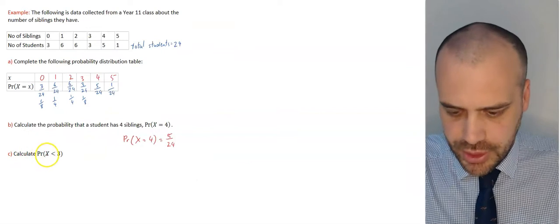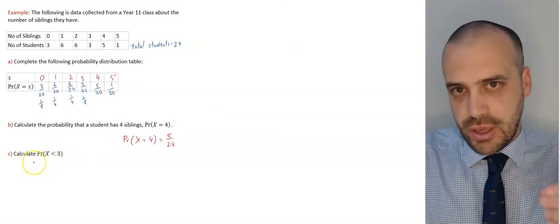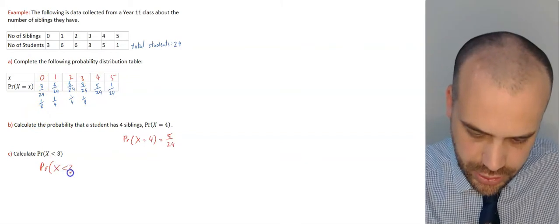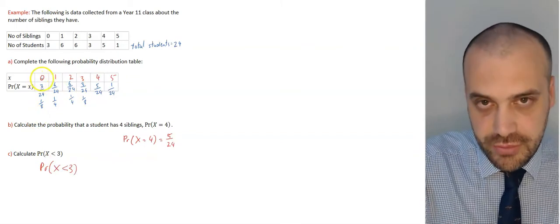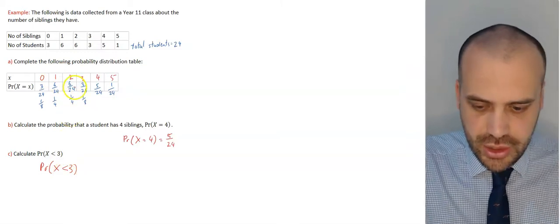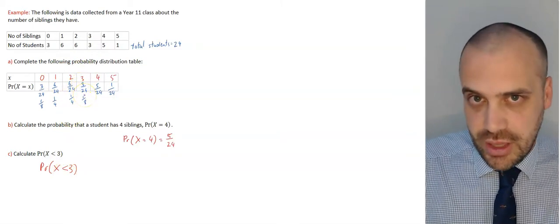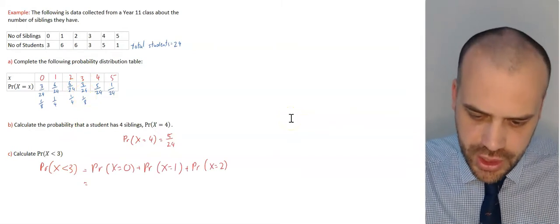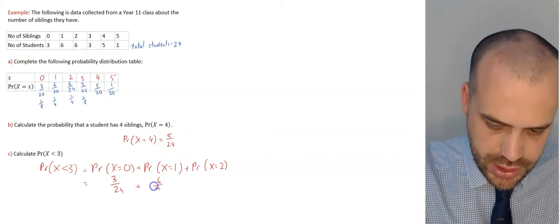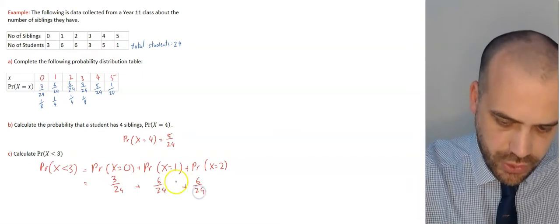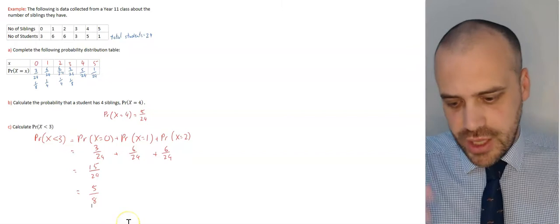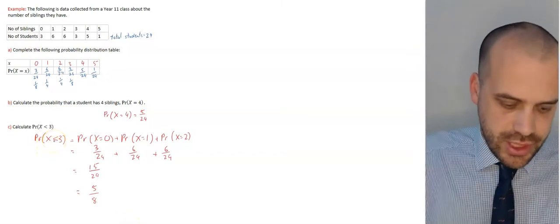You might get asked something like: calculate the probability that X is less than 3 — that someone has fewer than 3 siblings. The probability that X is less than 3 equals the probability of having 0, plus the probability of having 1, plus the probability of having 2. Remember it says less than, so we don't include 3. Adding those: 3 in 24, plus 6 in 24, plus 6 in 24 equals 15 in 24, which simplifies to 5 in 8.